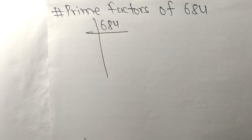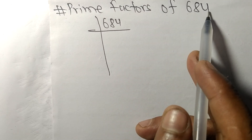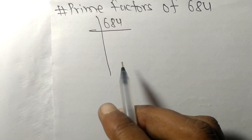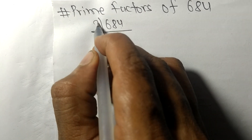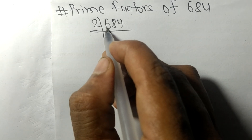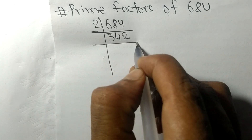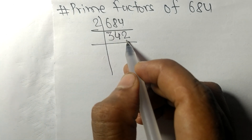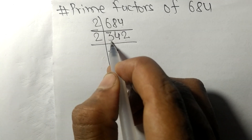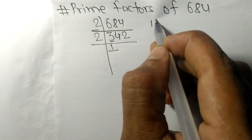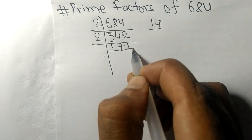Today we shall learn to find the prime factors of 684. It ends in an even number 4, so it is divisible by 2. 2 times 3 is 6, 2 times 4 is 8, 2 times 2 is 4 — again we have an even number at last, so it is divisible by 2 again. 2 times 1 is 2, remainder 1; 14 — 2 times 7 is 14.